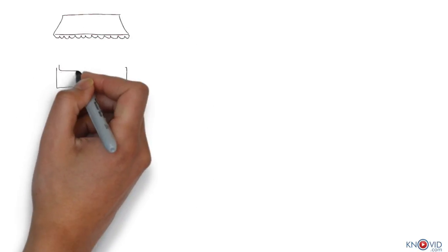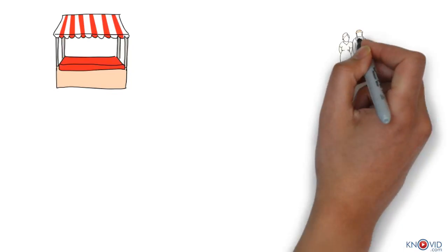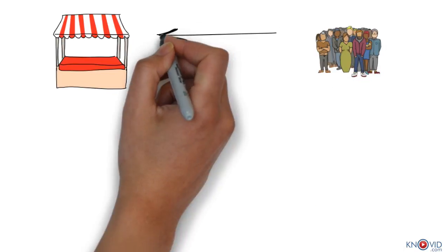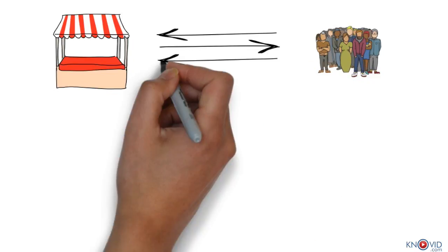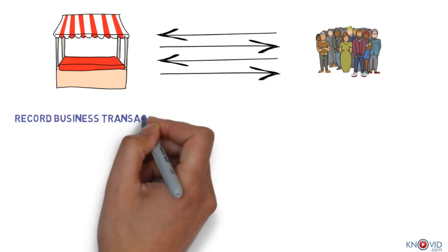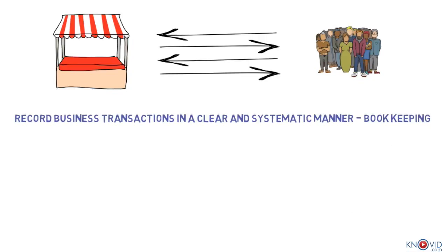All transactions related to business which can be expressed in terms of money should be recorded. As we saw, there can be hundreds and thousands of transactions every day. For this, we need to have a mechanism to record these business transactions in a clear and systematic manner. This is called bookkeeping. Bookkeeping is the science and art of correctly recording in the books of account all the business transactions that result in the transfer of money or money's worth.